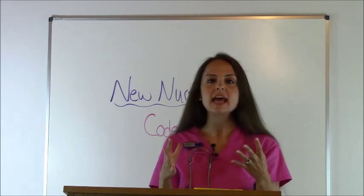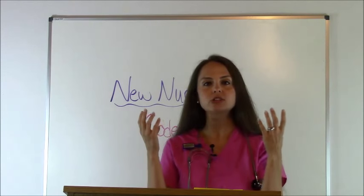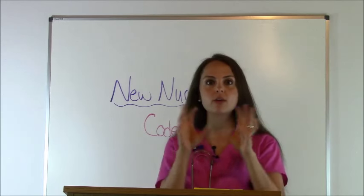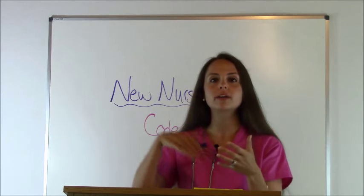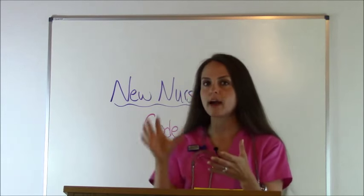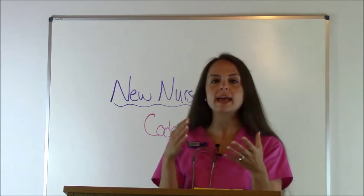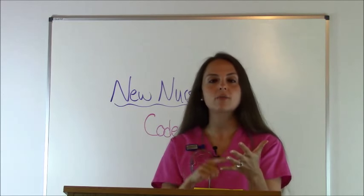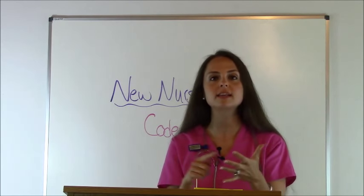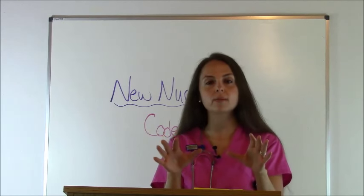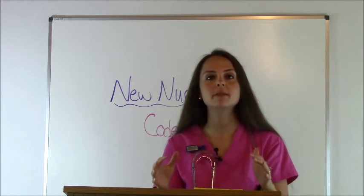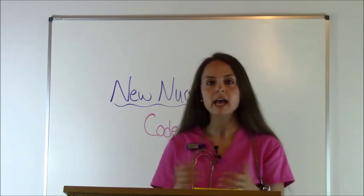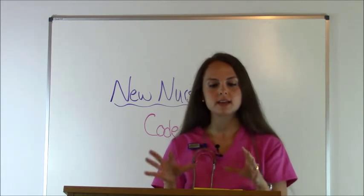A code status is usually a legal document the patient has shared with their doctor, and the doctor will have an order for you on the chart or in the electronic health record stating what the patient's code status is. Always look at that. This is where the patient is letting us know: if I go into cardiac arrest and can't make decisions for myself, this is how I want the healthcare professionals to take care of me — these are my wishes. A lot of times the patient will have a power of attorney to help make those decisions.